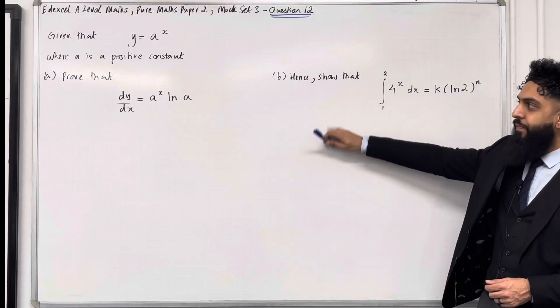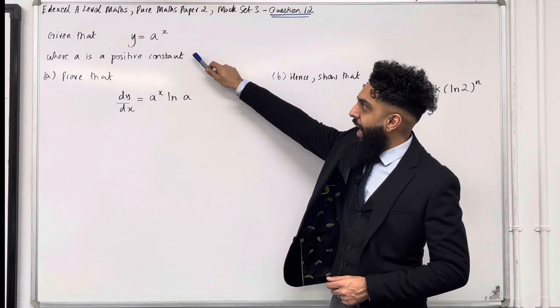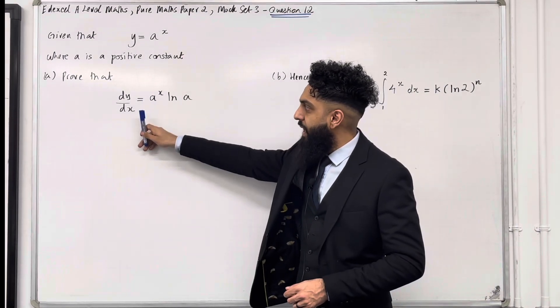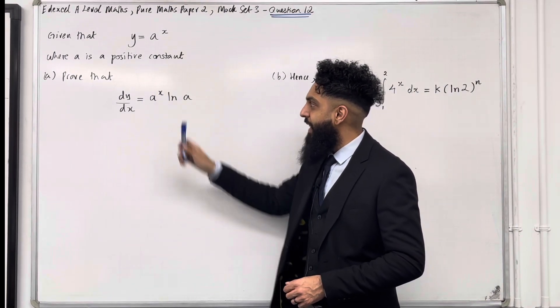Here is question 12. Given that y is equal a to the power x, where a is a positive constant, part a proved that dy over dx is equal a to the power x ln a.